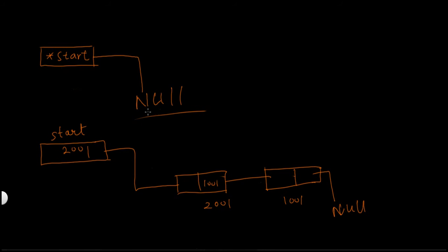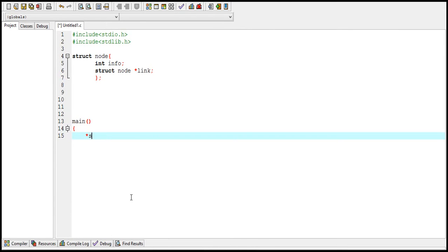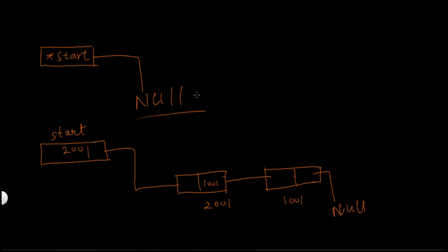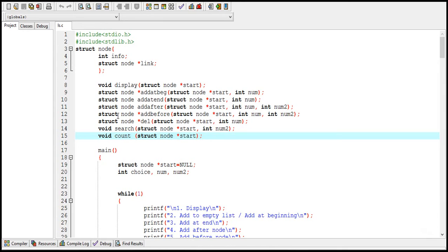Initially a linked list is always empty, and a linked list is empty when the value of start is equal to NULL. NULL has a predefined meaning in C — it means empty or nothing. So I declare a pointer variable named 'start' of type struct node and initialize it with NULL. When start equals NULL, it means the linked list is empty and contains no nodes, because start always stores the address of the first node in the linked list. If there is no node, start stores no address — start is equal to NULL.